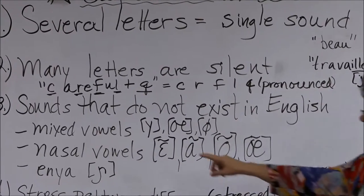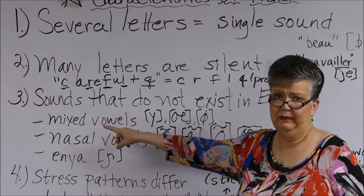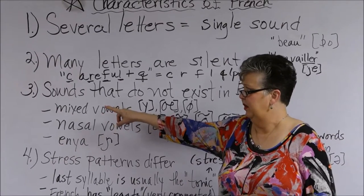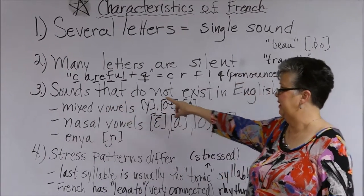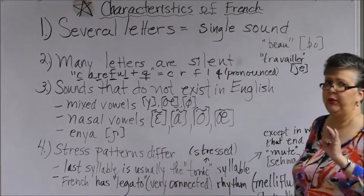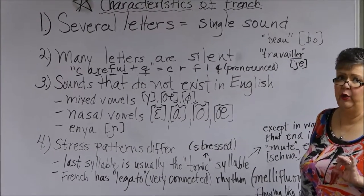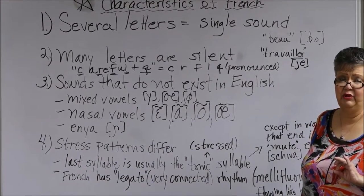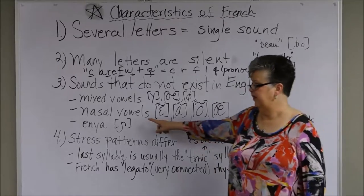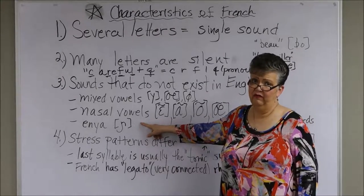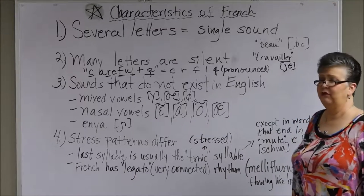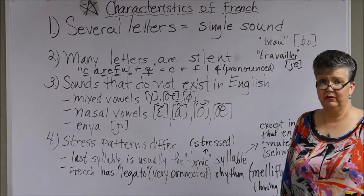Now, English is probably your native language there in Nagaland, as it is here in the States. So you will recognize sounds that do not exist in English. We have the mixed vowels first — as in U, Ü, and Œ — which are produced with the lips doing one thing and the tongue doing another simultaneously. Then we have the nasal vowels in French. There are four of those: the 'ã,' 'ɛ̃,' 'ɔ̃,' and 'œ̃.' You have to learn the spellings for those and when they occur.